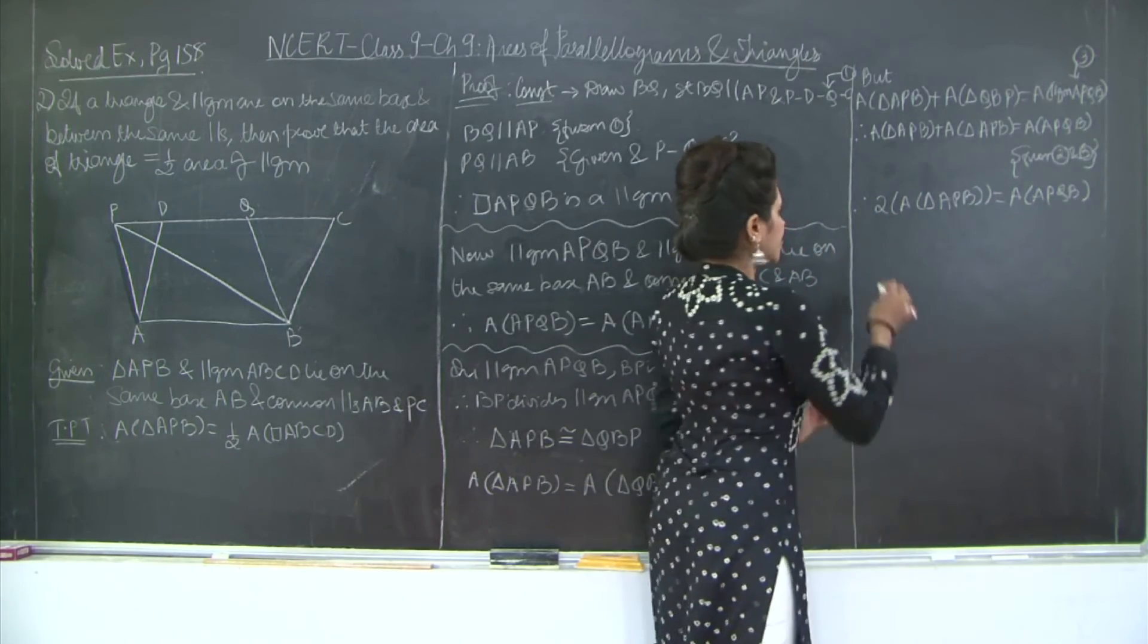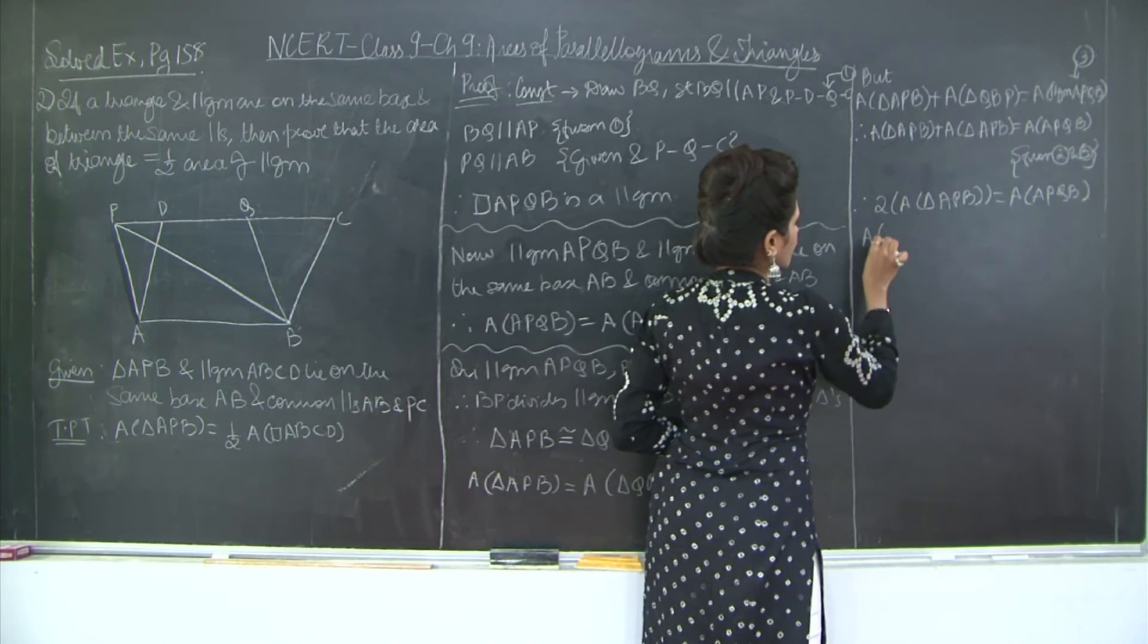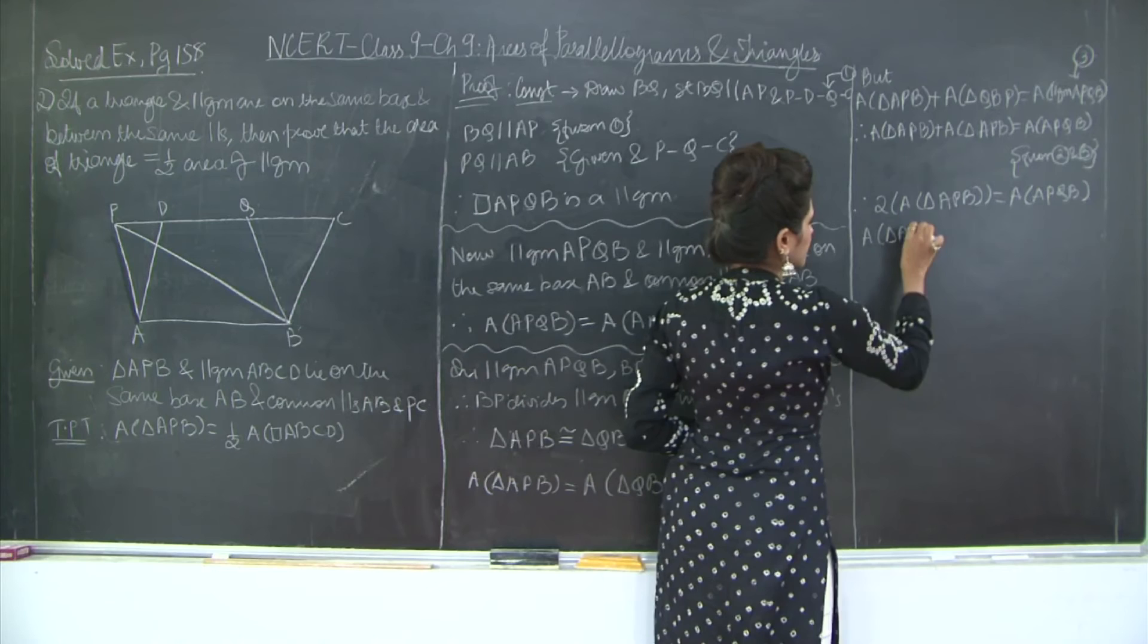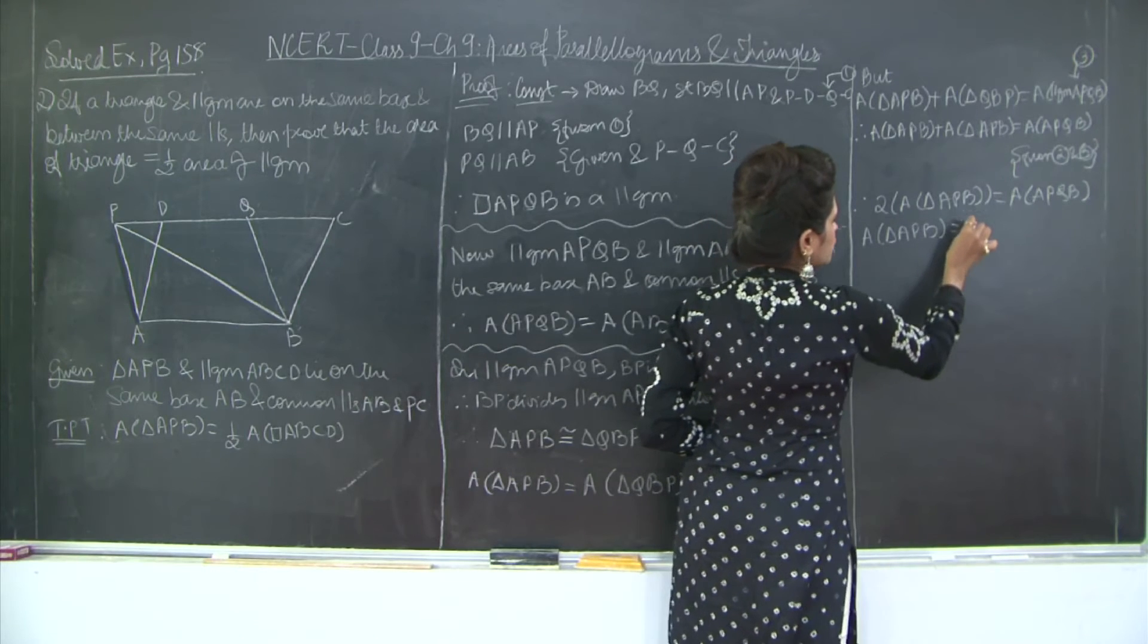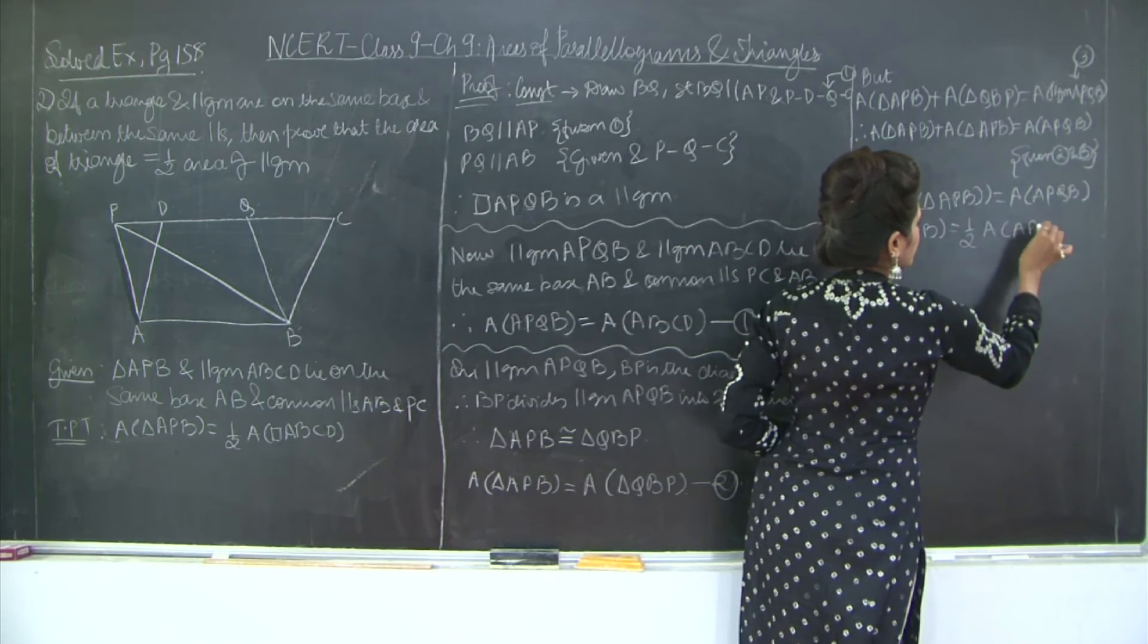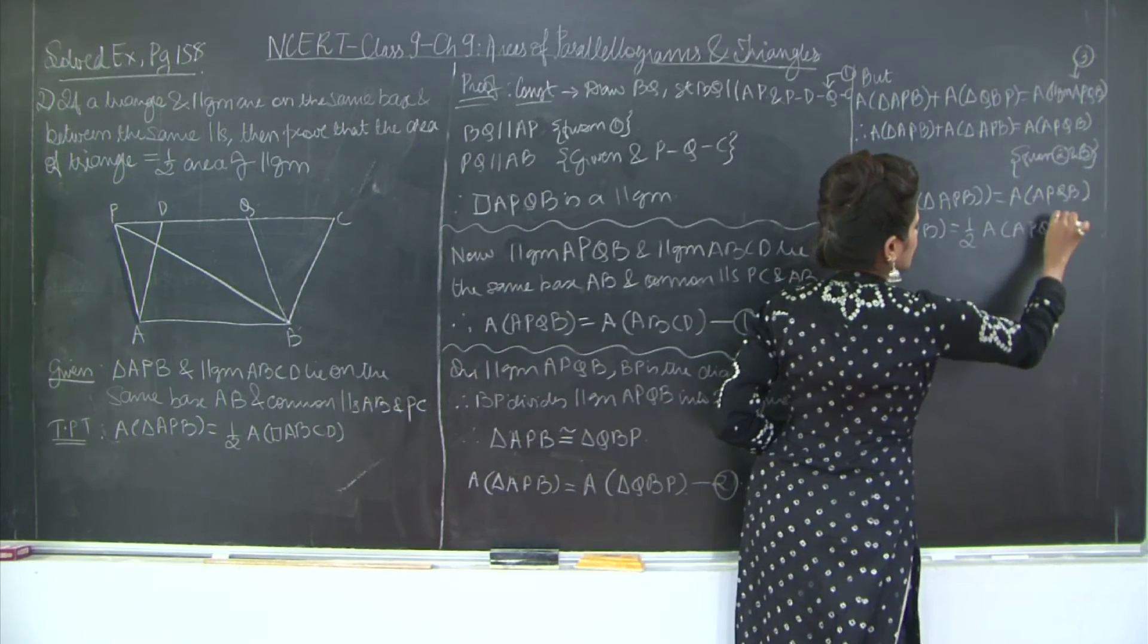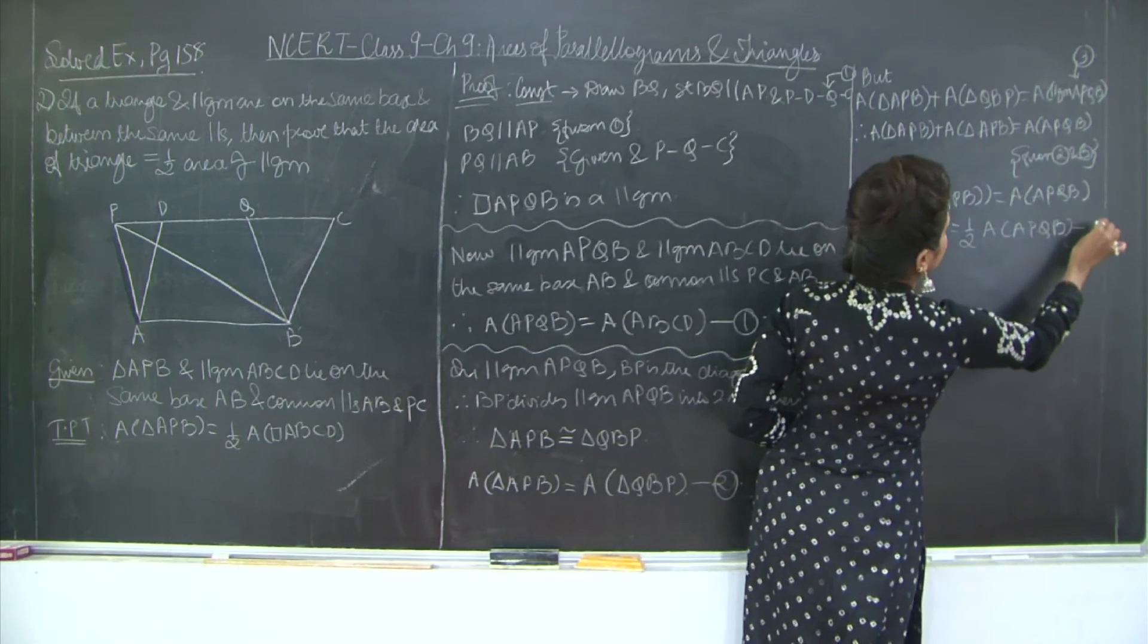Therefore, area of triangle APB plus area of triangle APB is equal to area of APQB. Now 2 we will take to the right hand side, so it will divide. Therefore, area of triangle APB is equal to half area of APQB. Let's mark this as equation 4.